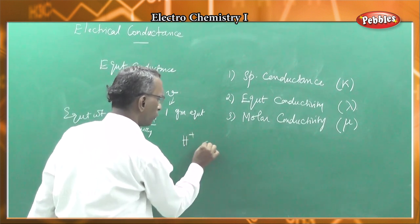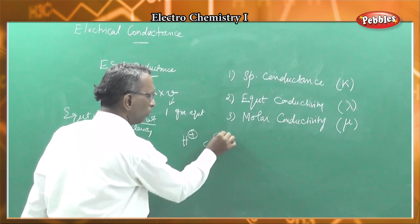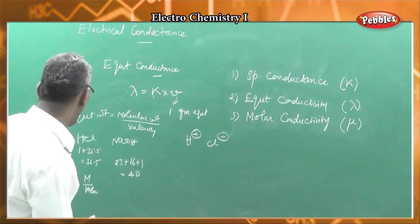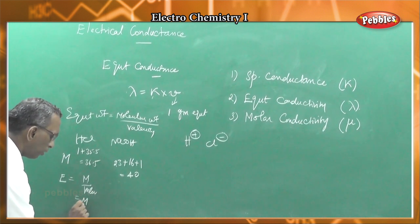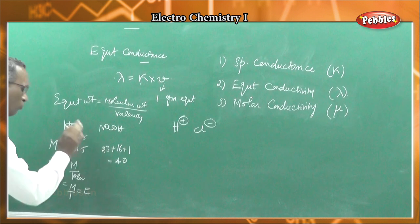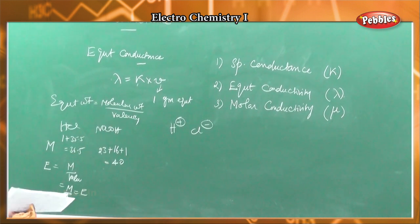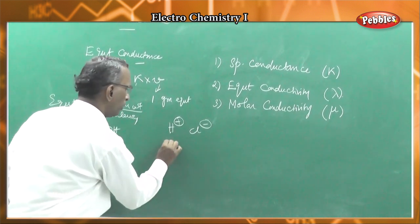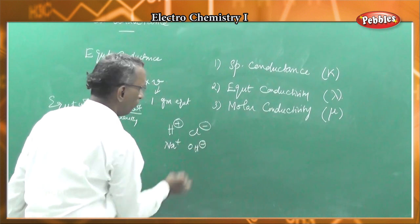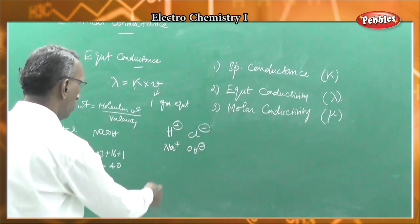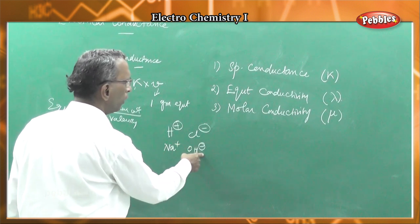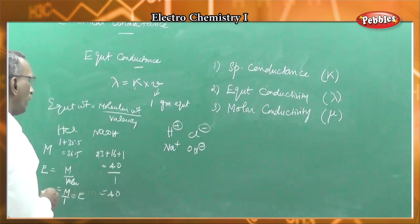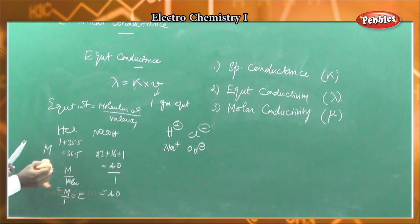HCl dissociates to H plus and Cl minus — one plus charge and one minus charge — so the number of electrons transferred is 1. Molecular weight by 1 equals the equivalent weight, so equivalent weight of HCl is 36.5. For NaOH: Na plus and OH minus, one electron is transferred, so equivalent weight equals molecular weight equals 40.